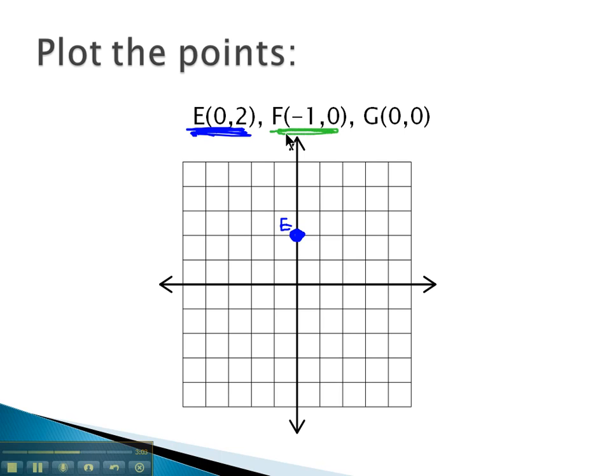F is at negative 1 comma 0. Negative 1 moves us 1 to the left, and 0 has no up or down movement. And so F goes right there on our coordinate plane.